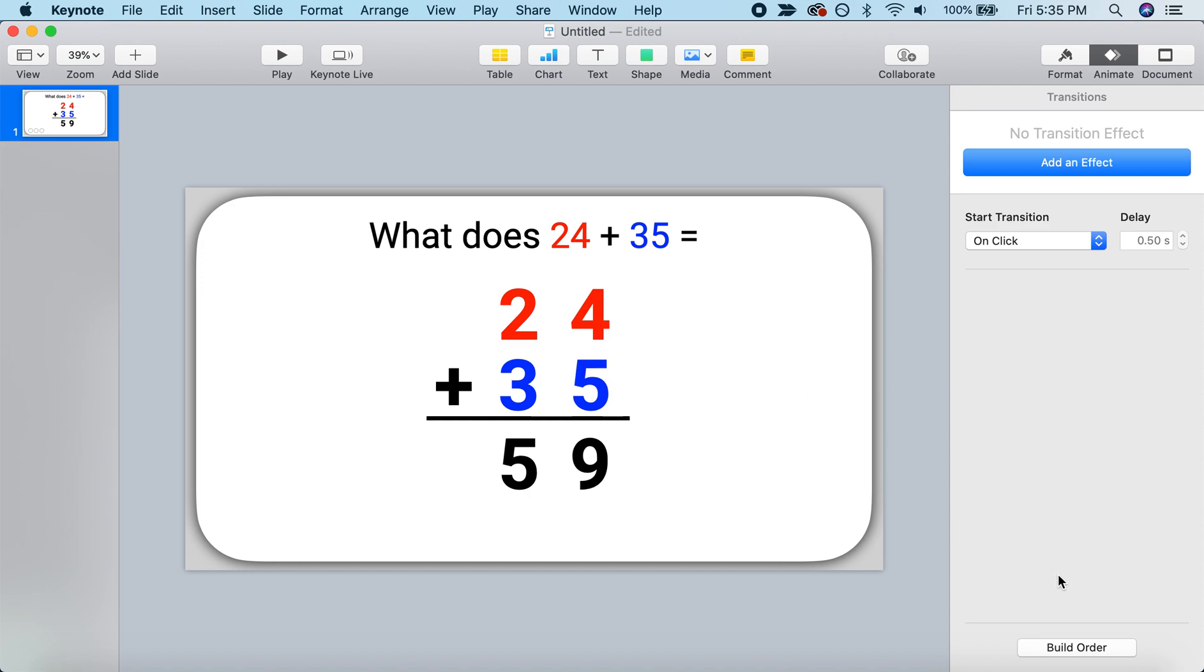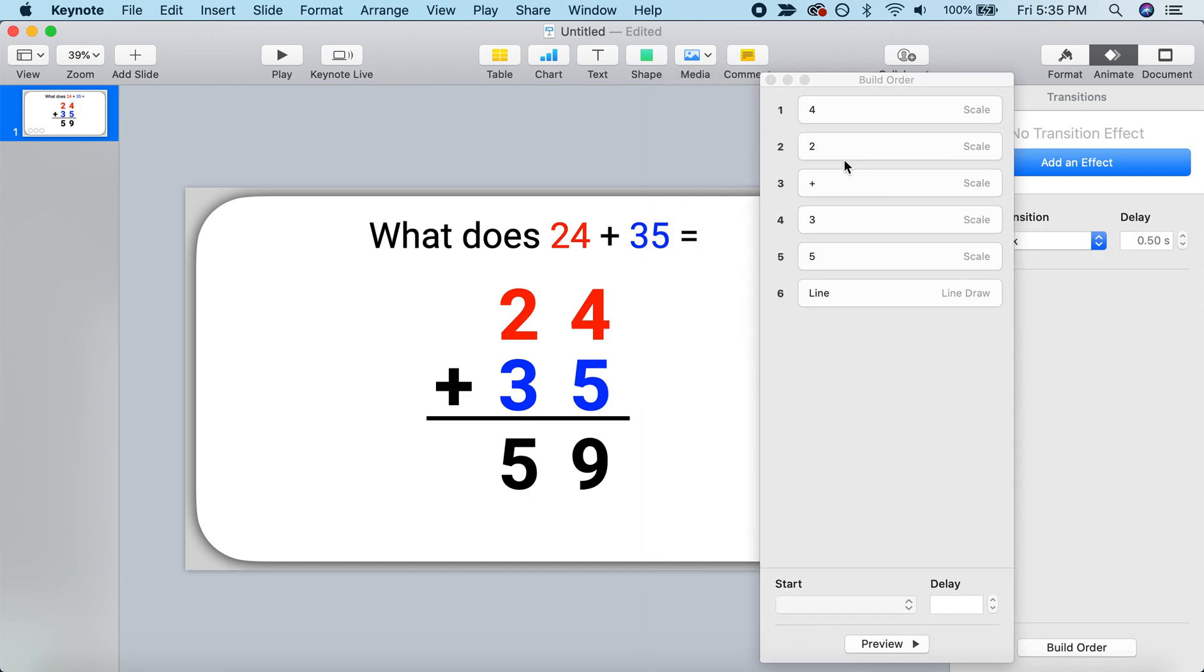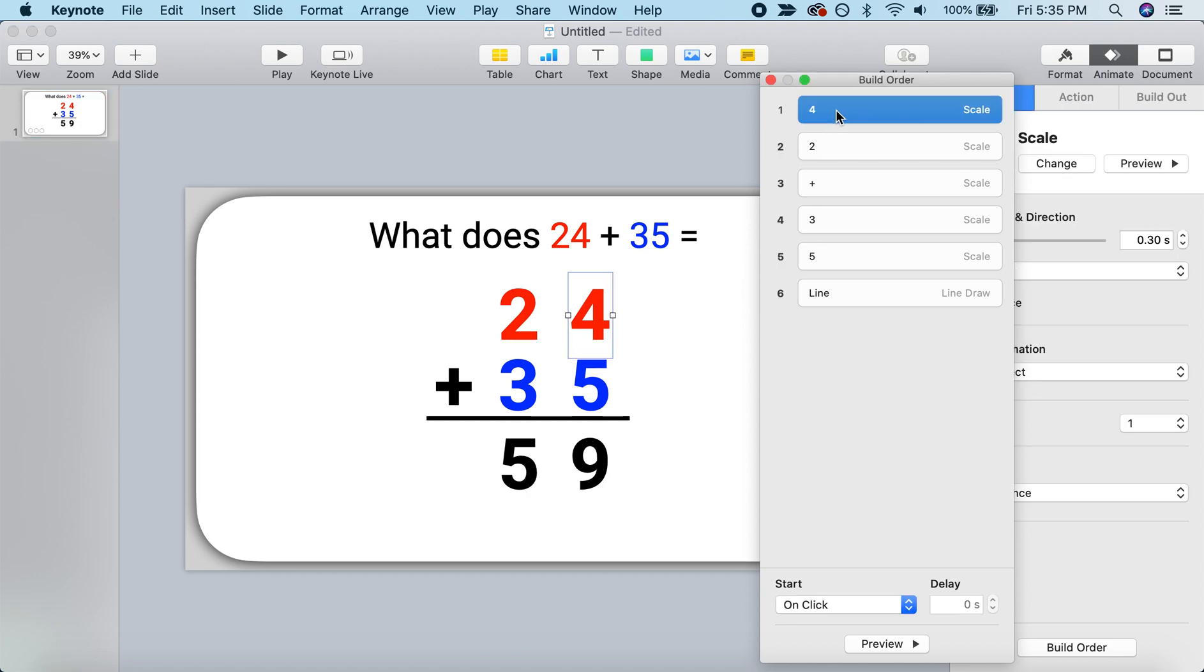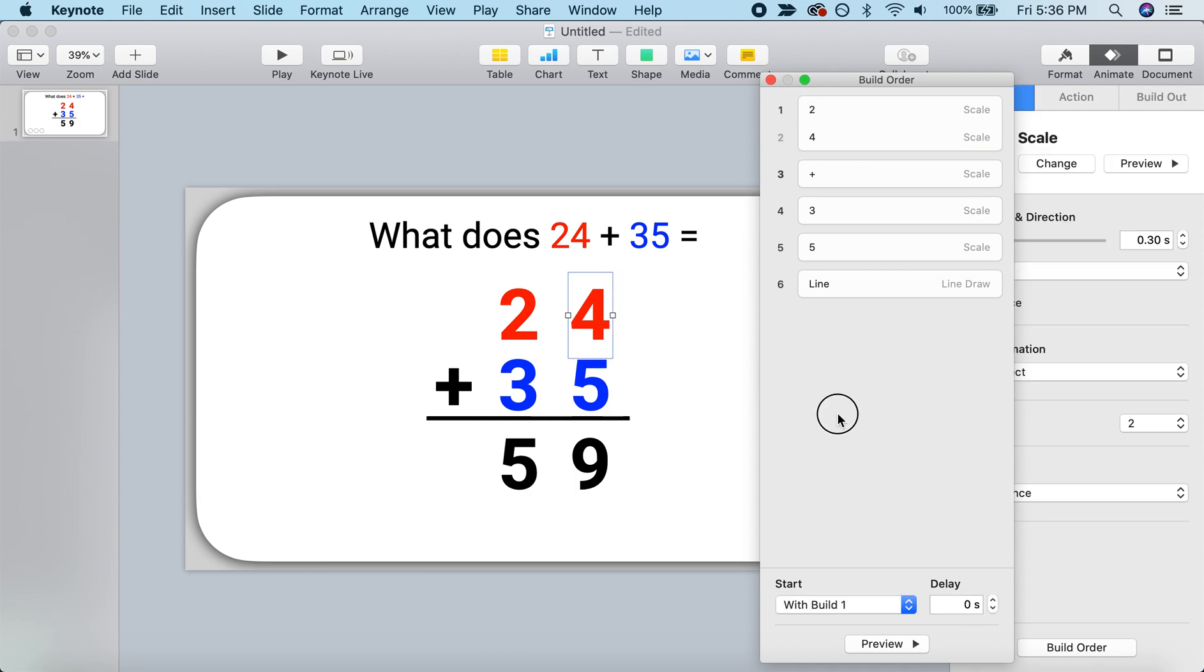And so let's come down to build order. And here we can see the order of our different animations. Right now, first is going to be the 4, then the 2. But I actually want the 2 and the 4 to happen at the same time. So I'm actually going to put 2 and the 4 just so it reads like 24. And then I'm going to make it so that this 4 appears at the same moment as the 2. I'm going to connect those animations. I'll do that by selecting the 4 and change it from on click to with the last build. Now you can see 24, it's all connected as a single animation.